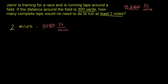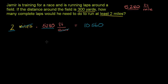Or you say 5,280 feet for every one mile. If we multiply the numbers, we get 2 times 5,280. Let's think of it this way: 2 times 80 is 160, 2 times 200 is 400, so 400 plus 160 is 560. And 2 times 5,000 is 10,000. So it's 10,560, and the miles cancel out — we're just left with feet.